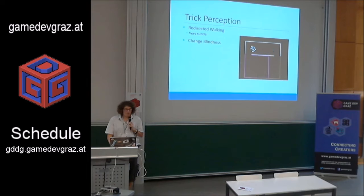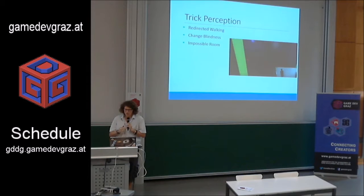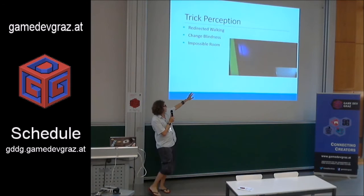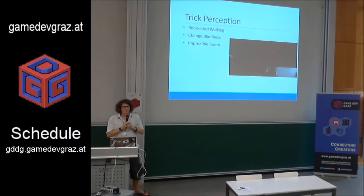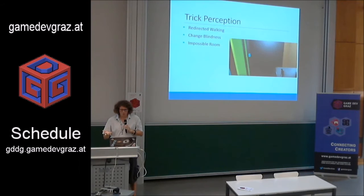The third approach is impossible rooms — you don't trick the player, you do it obviously. There's this game — I forgot the name — where the player walks through a room, goes left, it's a different room, goes through that, different room again, goes left into yet another different room. That way you can create an infinite play space, but each room is limited to roughly half your tracking space.